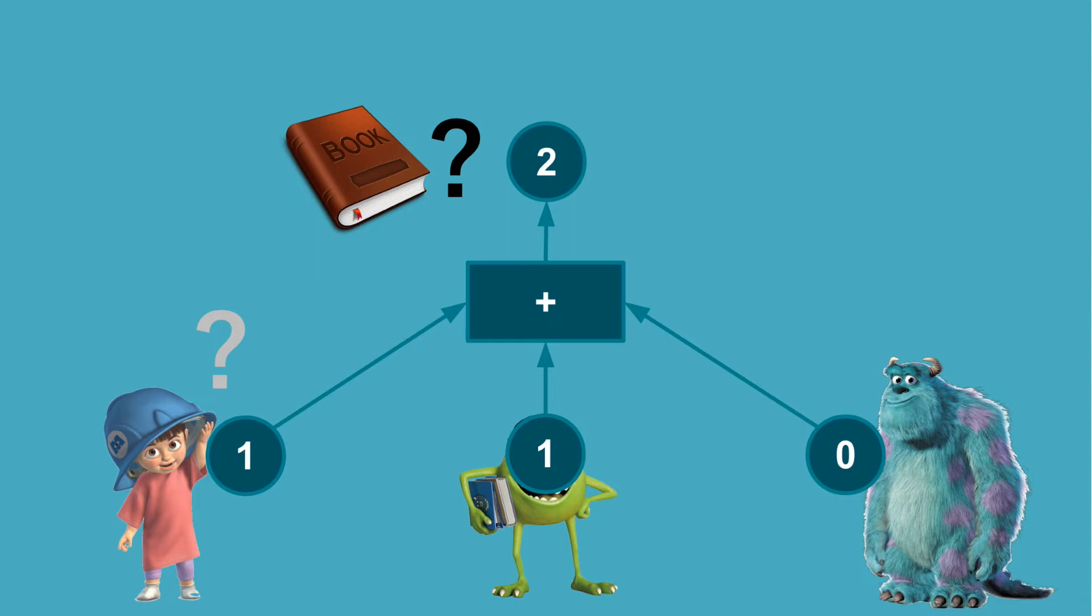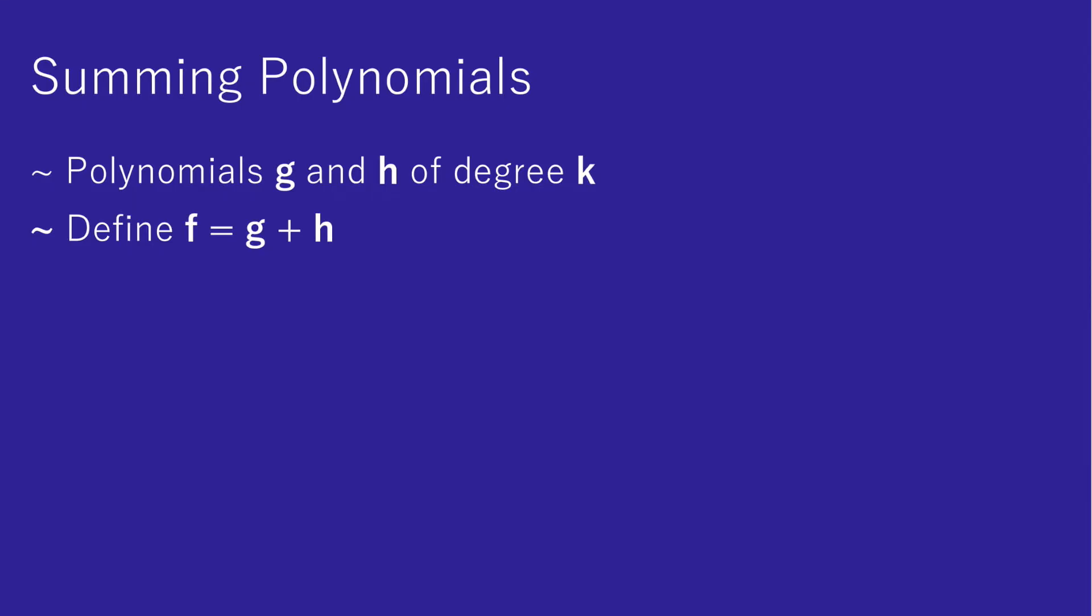But before we dive into the protocol, let's remind ourselves of two properties when we combine polynomials by addition. Let's say we have two polynomials of the same degree k. Then, if we define f to be the sum of those two polynomials, we will find that f is also of degree k. Furthermore, for each value of x, f(x) will be simply the sum of the value of x for each of the other two polynomials.